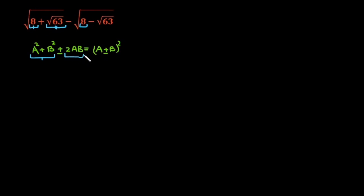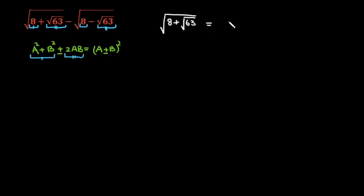Similarly, the second part √63 is our 2ab. If I take the first part of this question, √(8 + √63) is equal to... because this is my 2ab but there is no number in front of this, so if I write 8 plus 2 times √63, and at the same time if I divide with 2, whole under root.